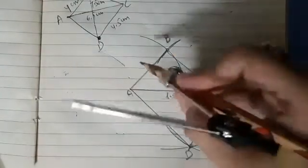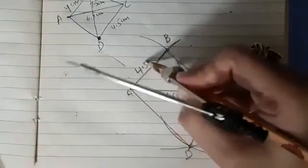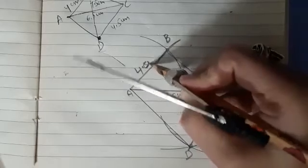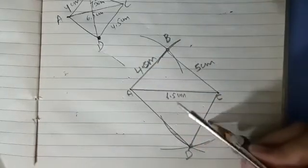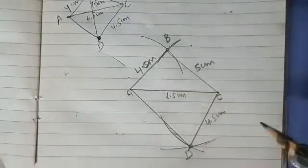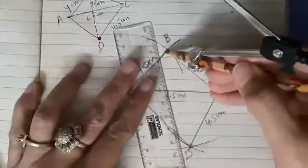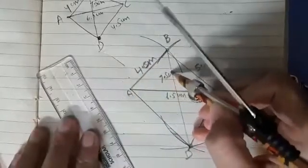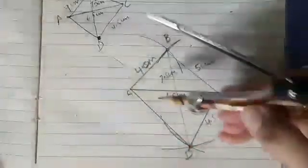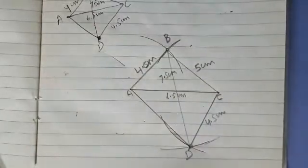And now you are going to mark the dimensions. This is 4 cm, this is 5 cm, this is 4.5 cm. And you can draw the diagonal which is given. So this diagonal is 7.5 cm. Already we have mentioned AC as 6.5 cm.